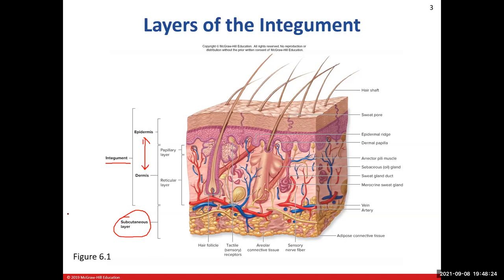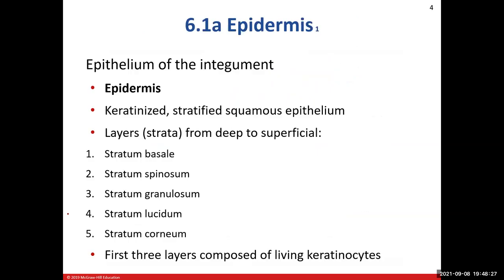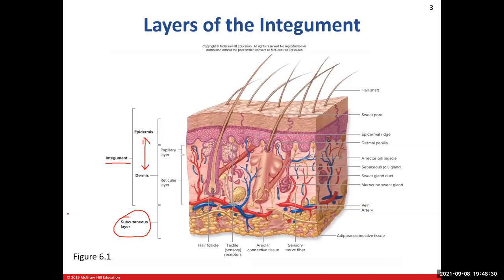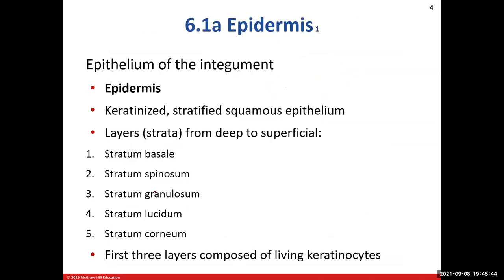There are two layers: the outer surface layer, which is the epidermis, and then the deeper layer, which is called the dermis. Those are the two layers of the integument. The epidermis is made up of one of your four tissue types — epithelial tissue. Specifically, it's made up of the keratinized stratified squamous epithelium.